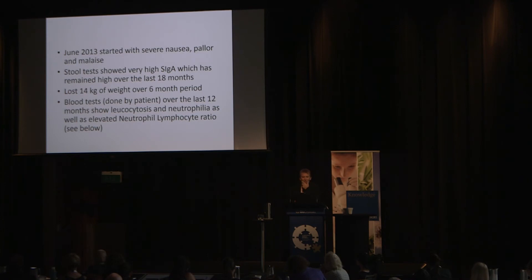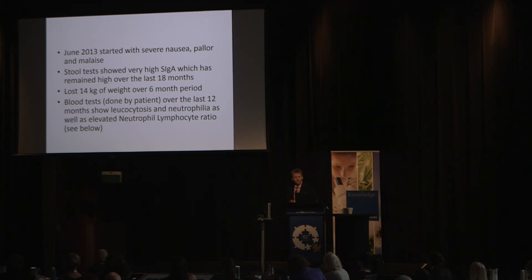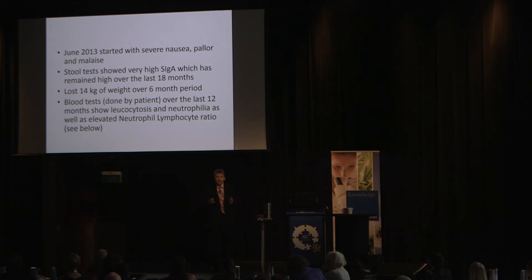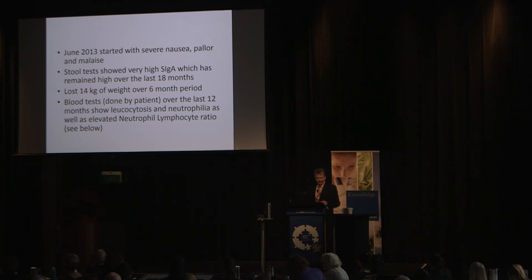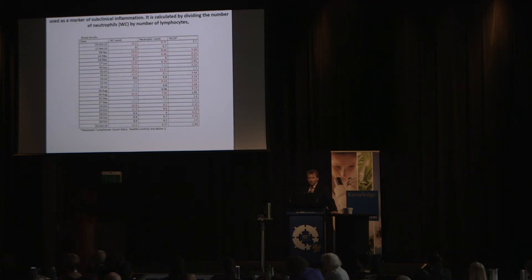In June 2013, he began to get severe nausea and vomiting, pallor, and a sense of malaise. A stool test showed very raised secretory IgA, which had remained high over the last 18 months. I have measured thousands of people's secretory IgA — only one other patient I've seen had levels like these. He had lost 14 kilograms of weight over the last six months. Blood tests showed leukocytosis and neutrophilia, as well as an elevated neutrophil-lymphocyte ratio, which he put into a chart to send to me.